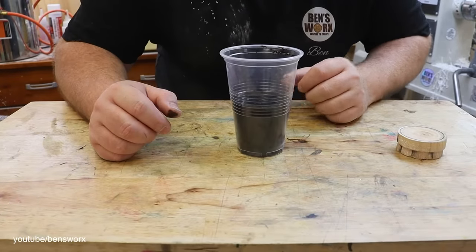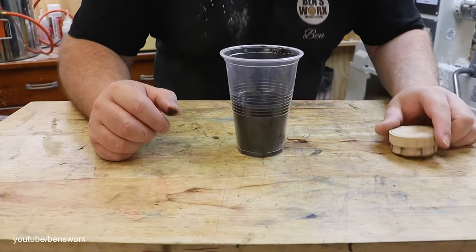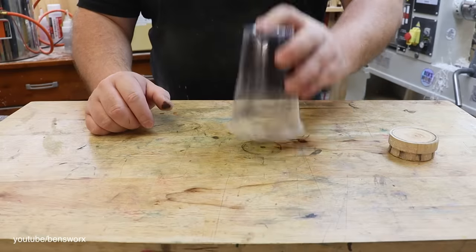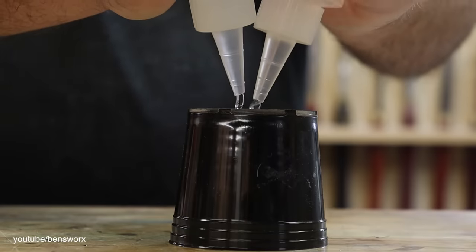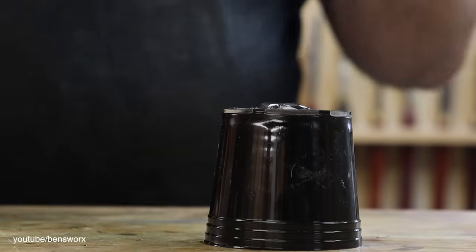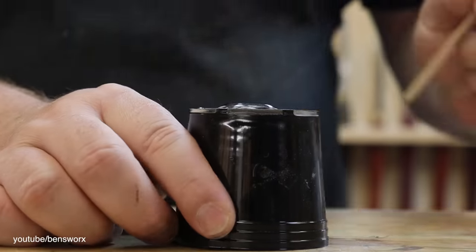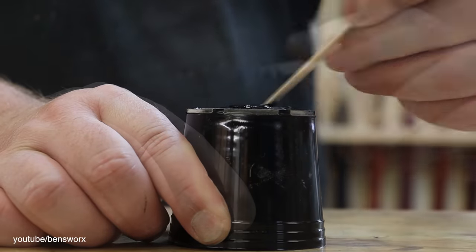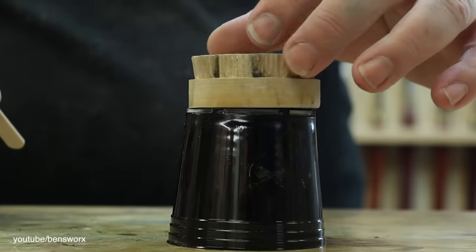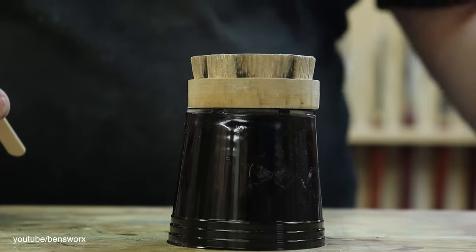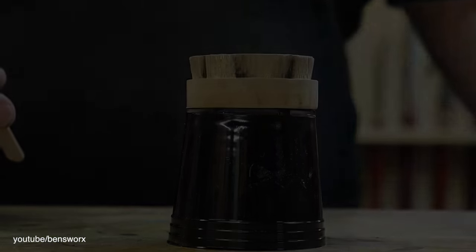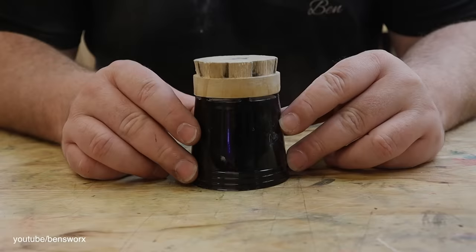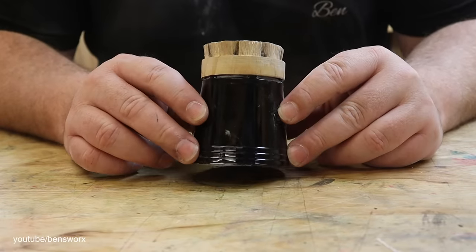Now that our black resin is cured I can glue it to the waste block. Now that my glue is all dry we can start turning the front of the ball.